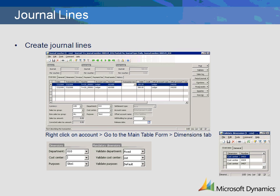The third dimension, purpose, has a validation rule set up as default. The dimension listed will default into the transaction but can be changed or removed.